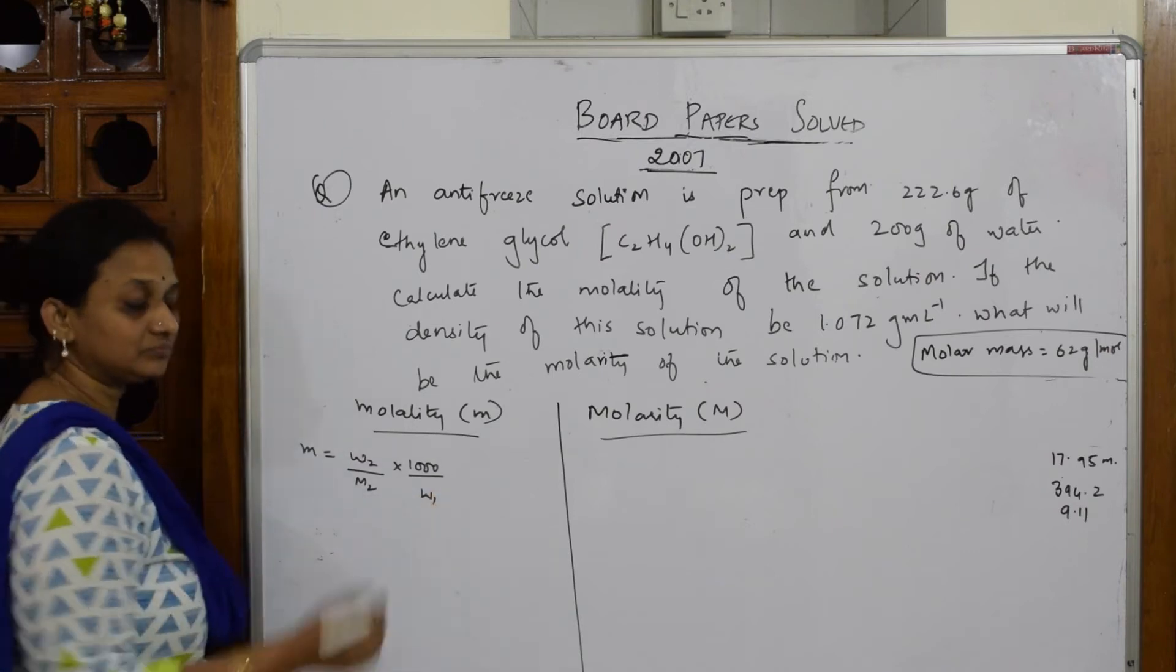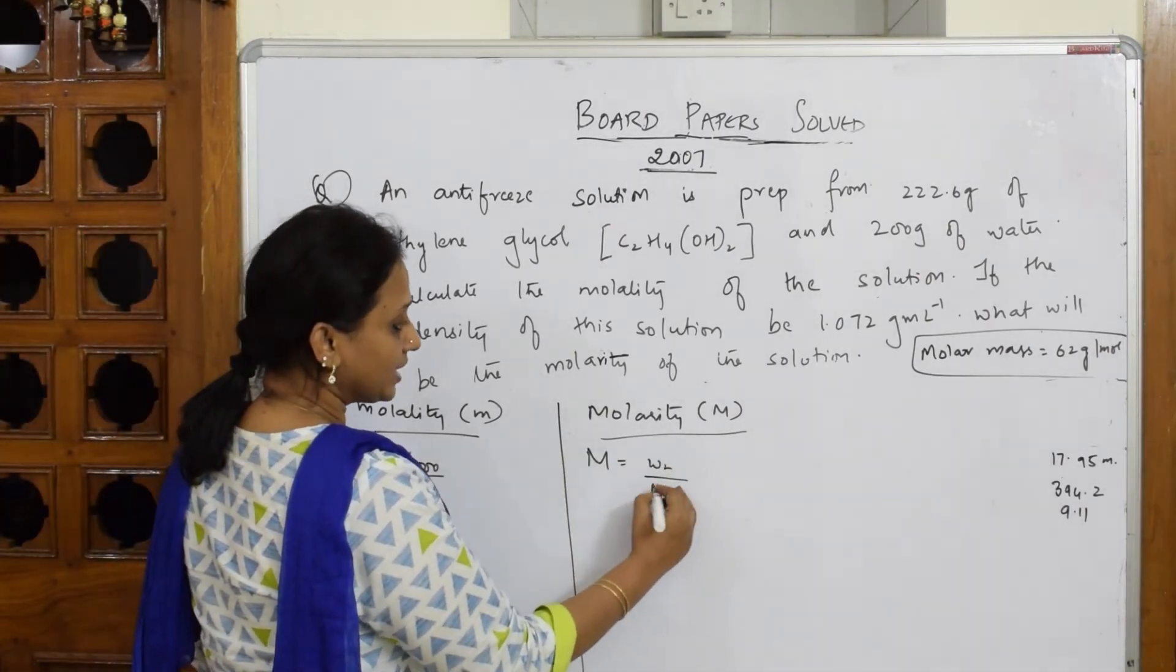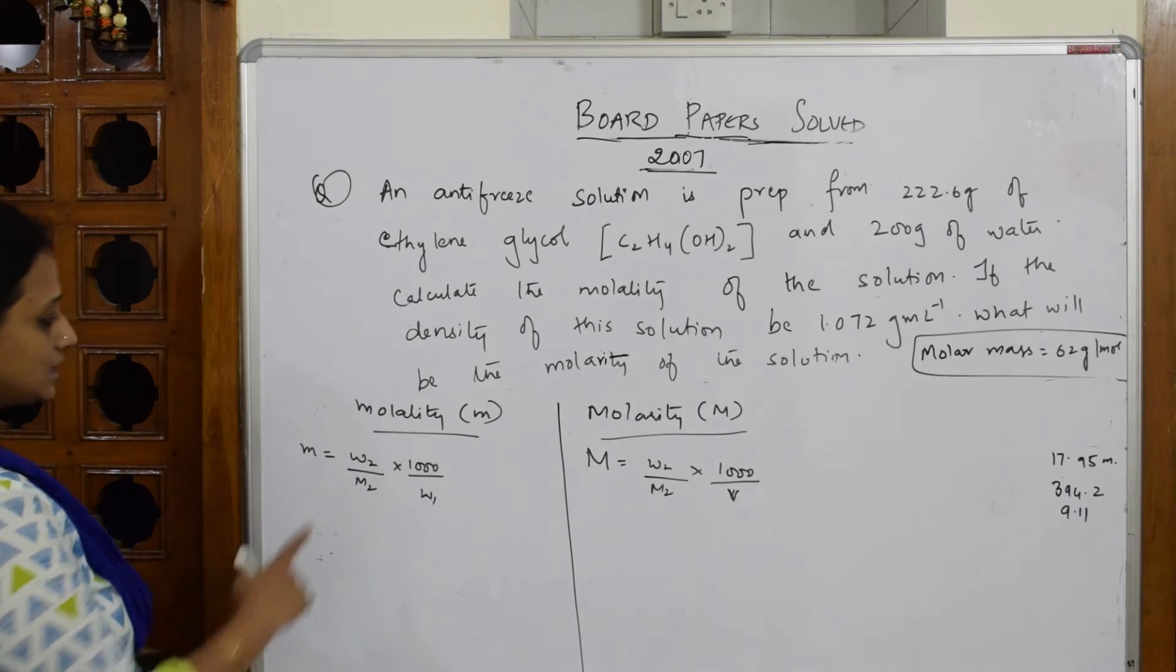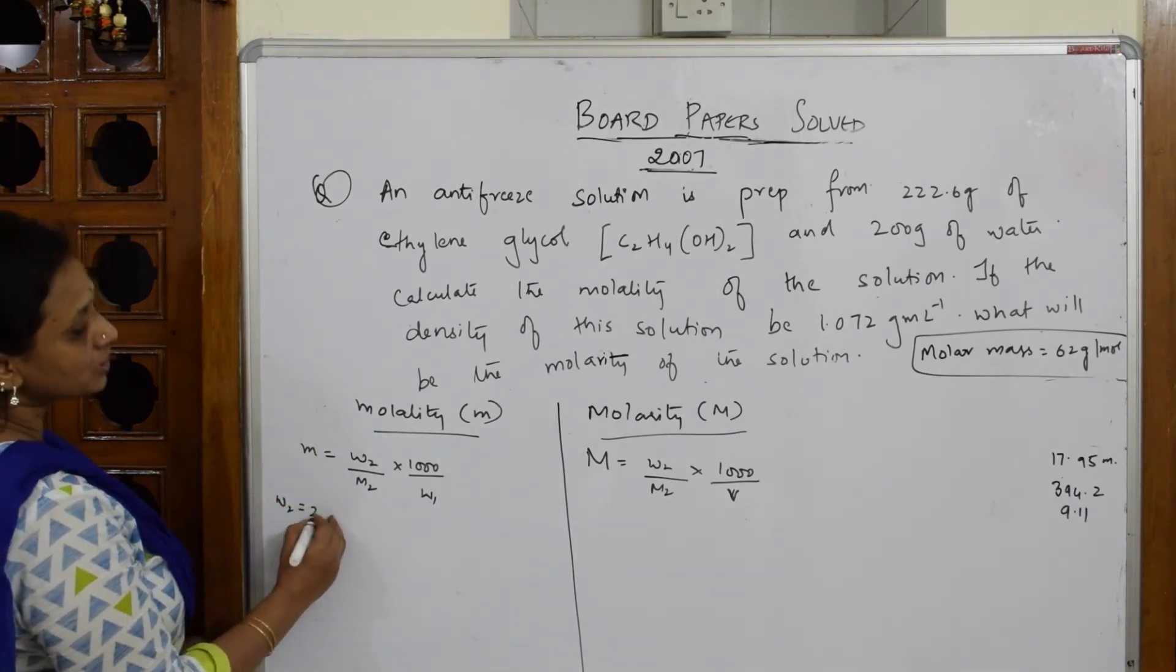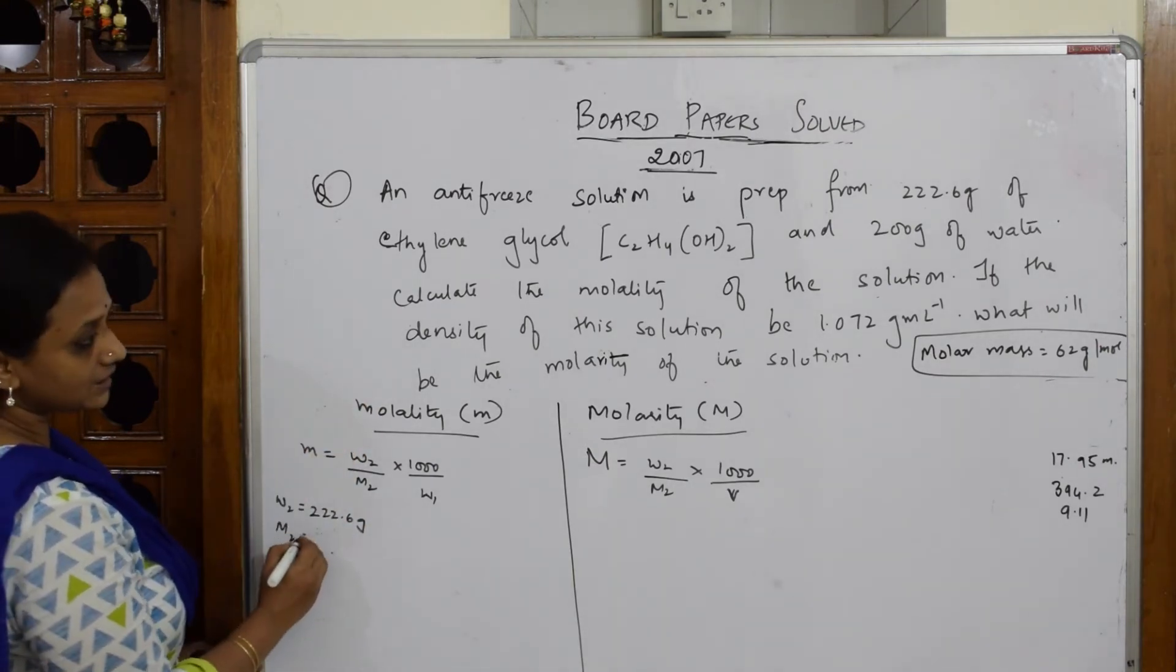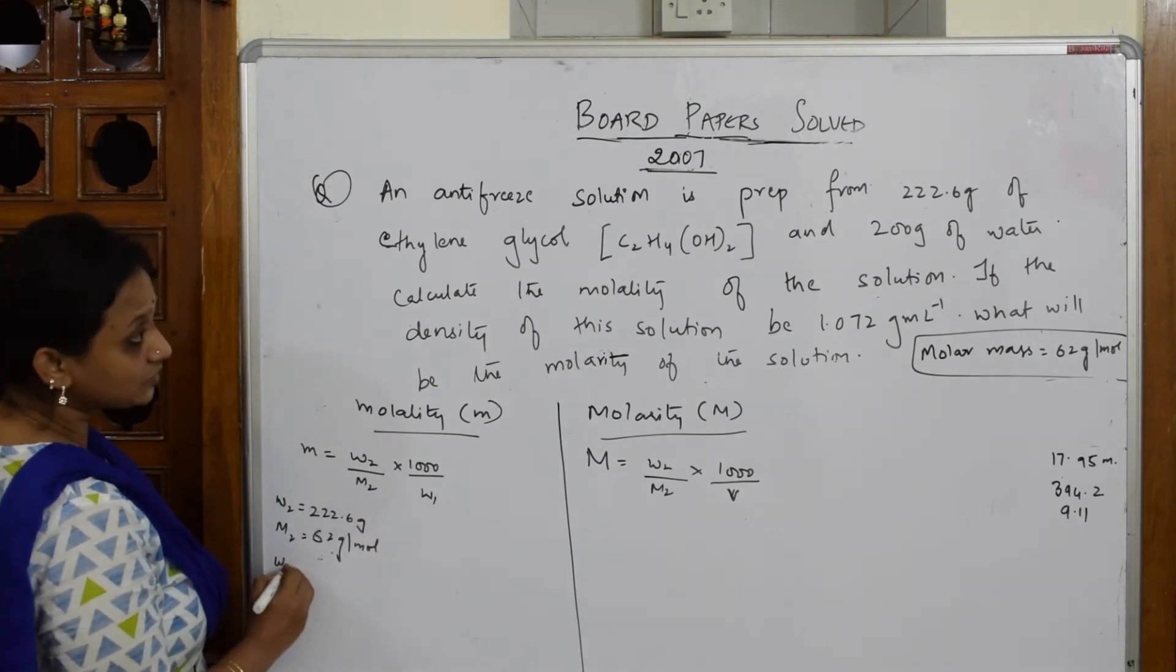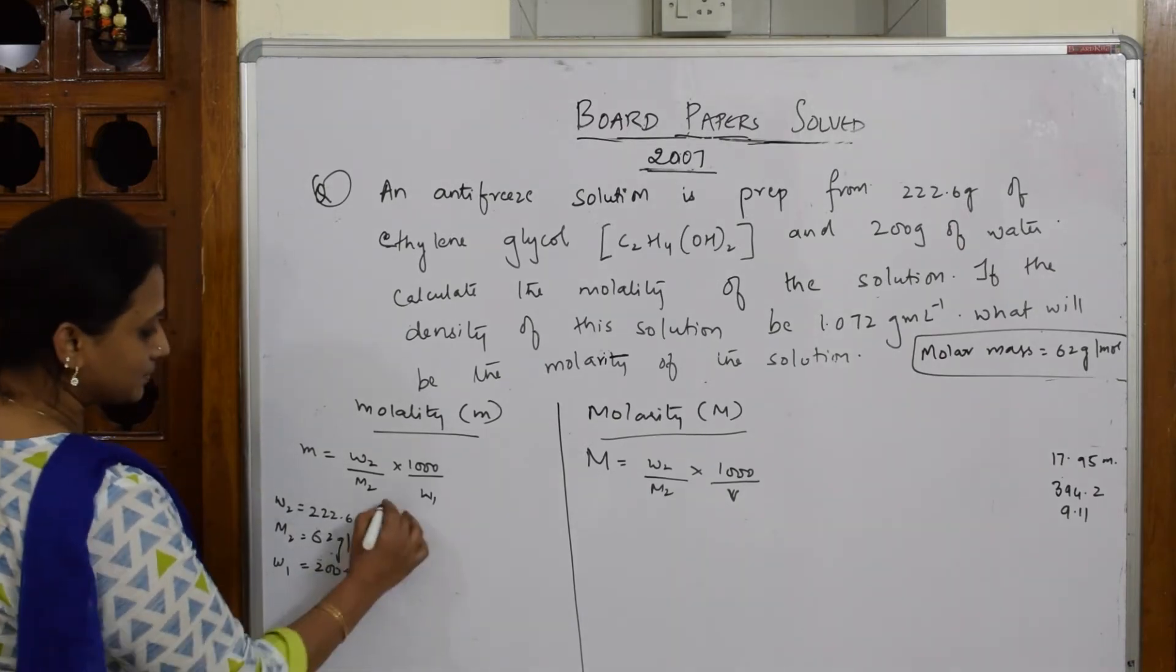Let's come back. What is w2 here? w2 given to me is 222.6 grams. What is m2? Molecular weight is 62 gram per mole. What is w1? Weight of solvent is 200 grams. Now substitute in the formula.